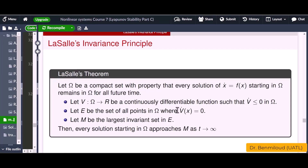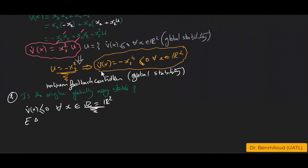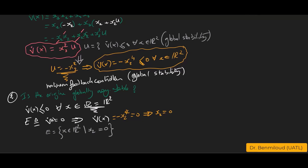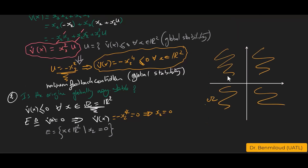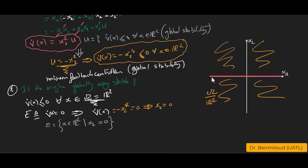We identify set E as the set of points where V̇(x) = 0. In our case, V̇(x) = -x₂⁴ = 0 implies x₂ = 0. Hence, set E corresponds to the x₁-axis. In the phase plane, Ω = ℝ² where V̇(x) ≤ 0, and E corresponds to V̇(x) = 0, which is the x₁-axis, meaning x₂ = 0.